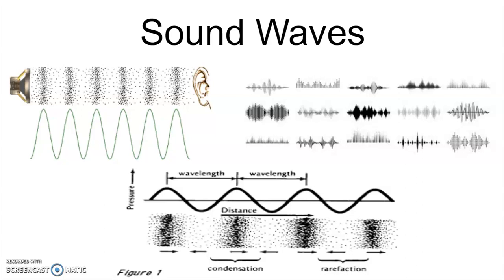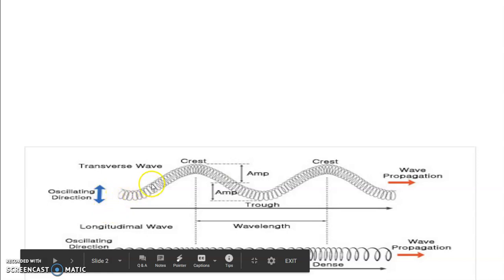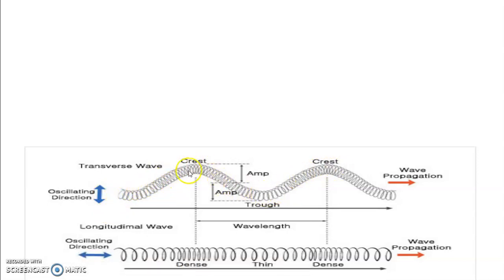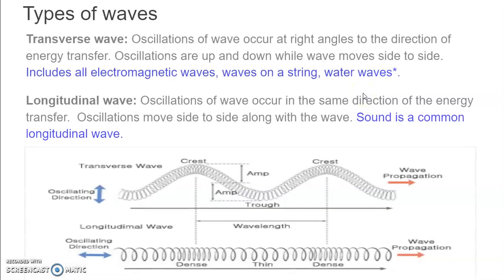First, we go back to the different types of waves. There are two types: transverse waves — like waves on a string or water waves — where particles of the medium go up and down while the wave moves side to side. Then there are longitudinal waves, where the particles move in the same direction as the oscillation. Sound waves are longitudinal waves — make sure you know that.